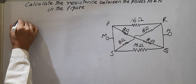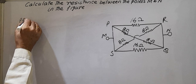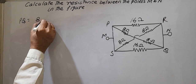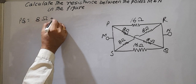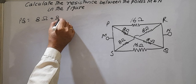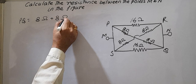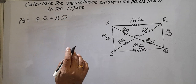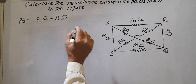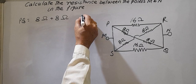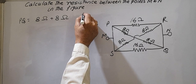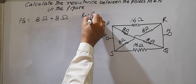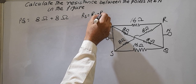So I can write PQ: PQ equals 8 ohms plus 8 ohms. We know that in series connections, R_series equals R1 plus R2 — remember this. This is R1, this is R2, this is R series.